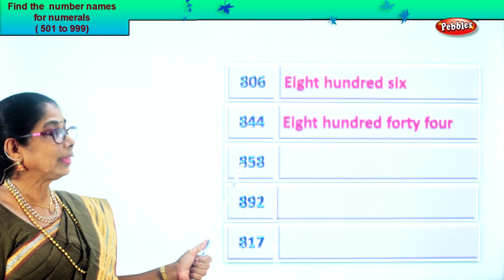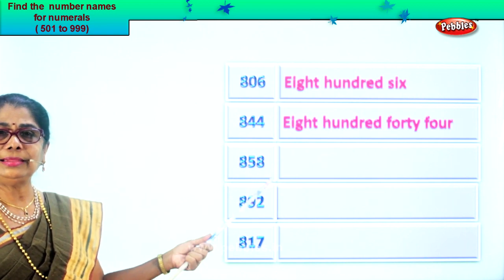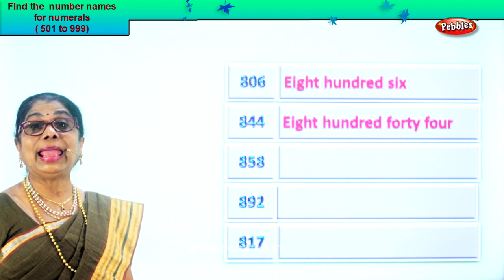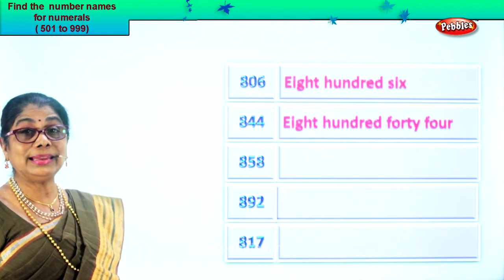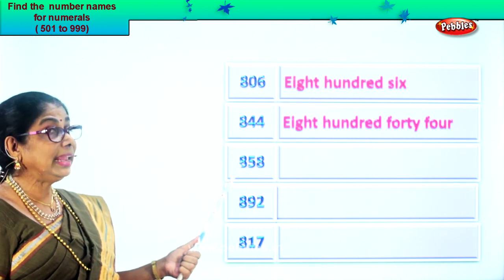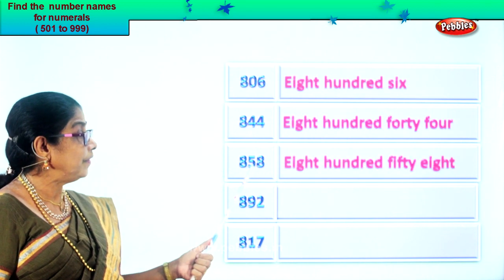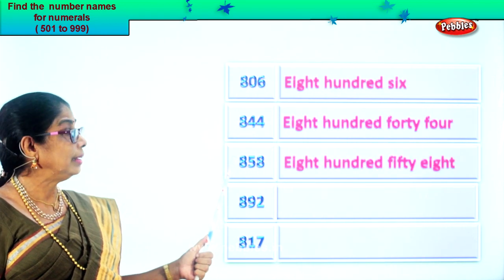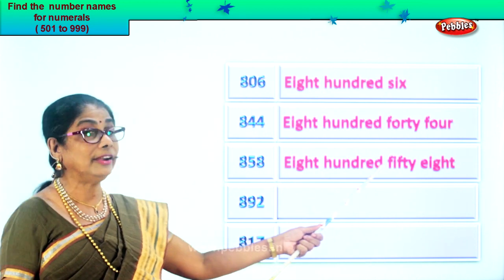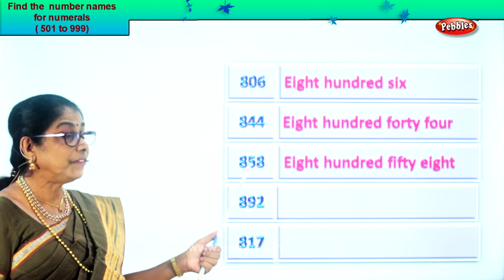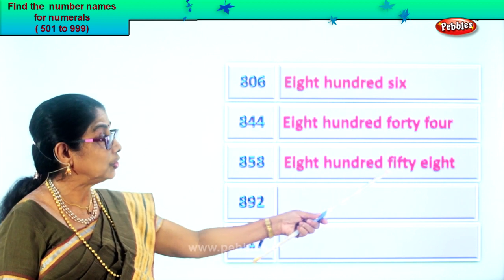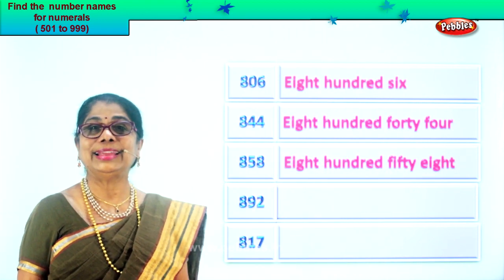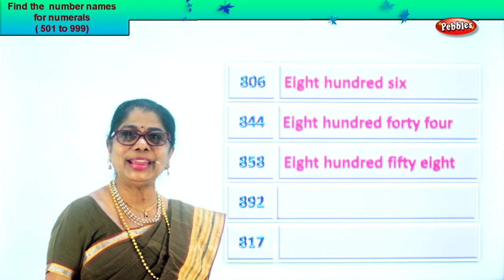Let's look at this number: eight, five, eight. Eight in the ones place, five in the tens and eight in the hundreds place. Read the number: eight hundred fifty-eight. How many hundreds? Eight hundred. So we write eight hundred first, next fifty-eight. Eight hundred fifty-eight. Did you enjoy? Good.